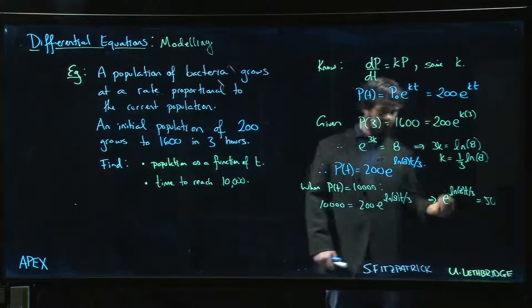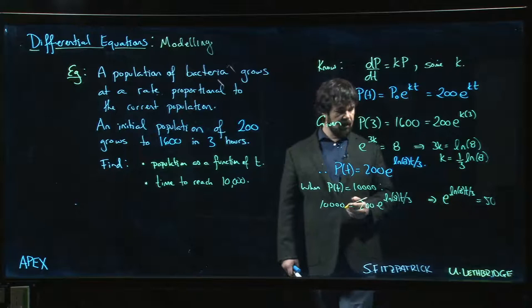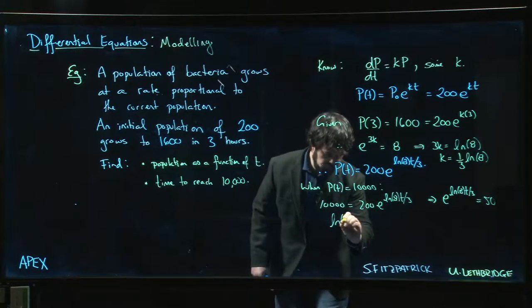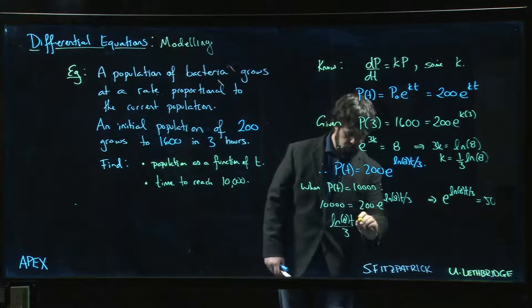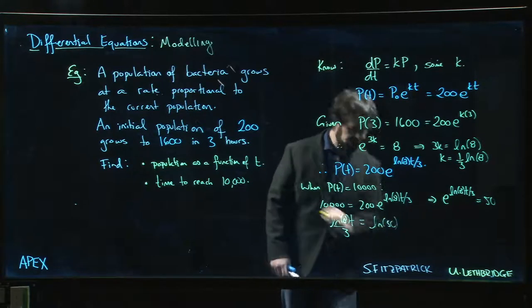We take log of both sides. Log of 8 t over 3 is equal to the natural log of 50.